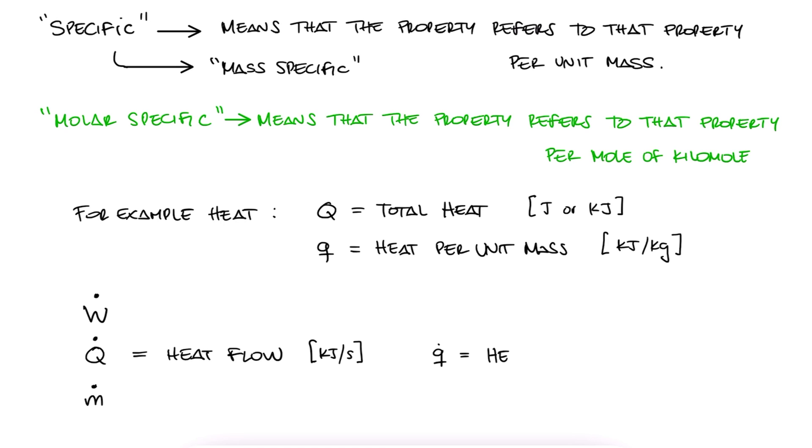And lowercase q dot would be heat flow or heat per kilogram per second. M dot would be the mass flow or mass per second. And so on and so forth.